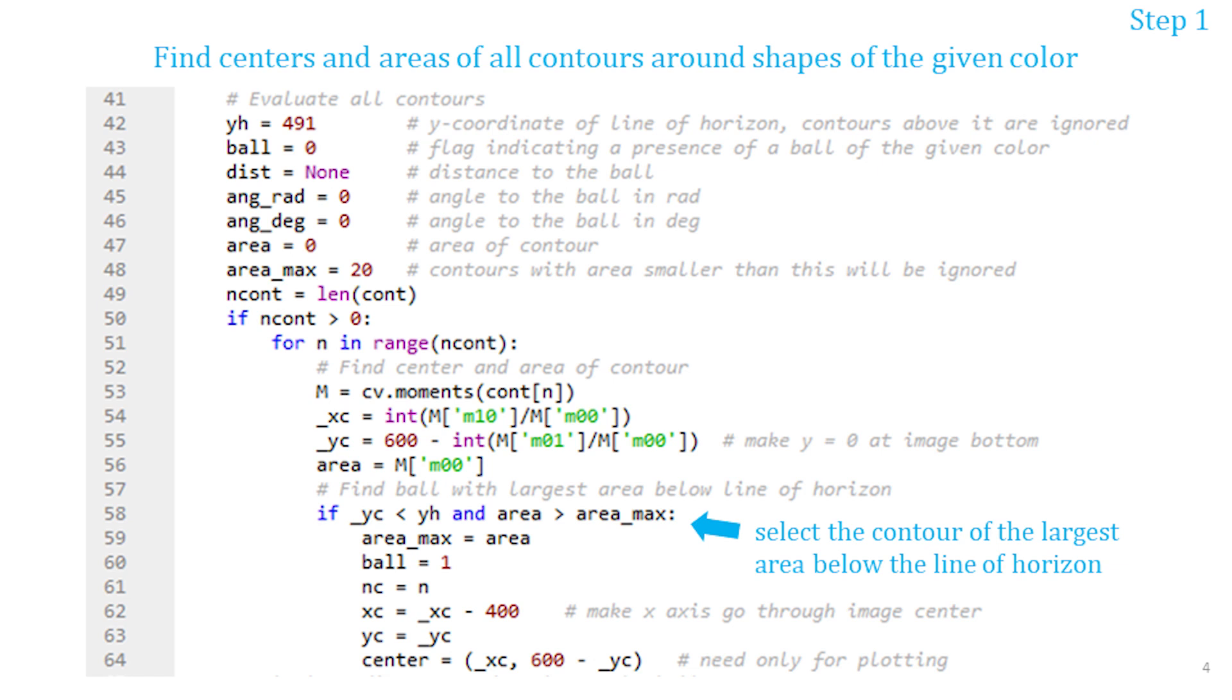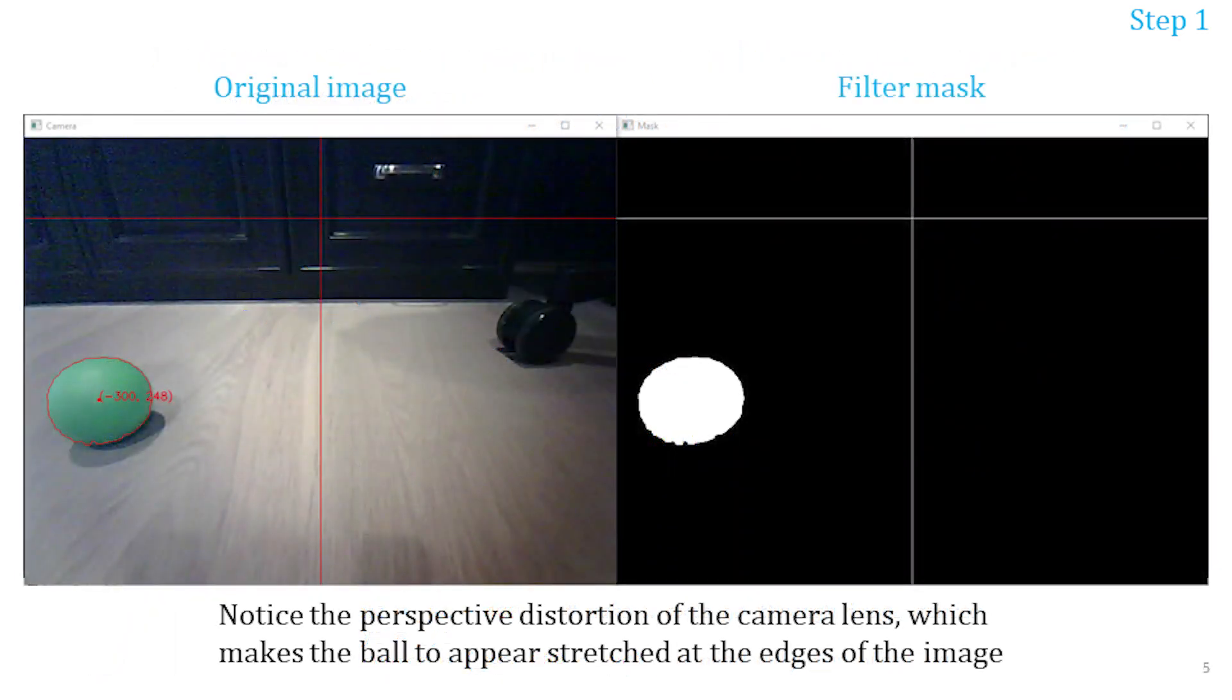There will be false detections of the ball. At first I tried to fit circles to all contours and keep only those contours that had the fitting error below a certain threshold. That only made the code slower without improving its ball detection performance much. Also the perspective distortion of the camera lens made the ball look like an ellipse closer to the image edges which introduced large fitting errors. Undoing the lens distortion to preserve the ball's circular shape and fitting circles to all the contours complicated the task and I decided not to do that and instead detect the ball simply by its color and area.